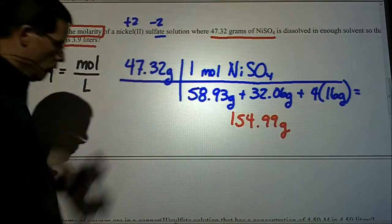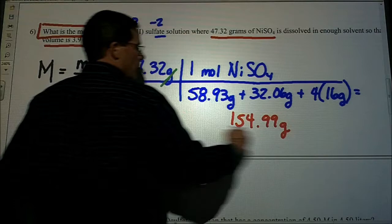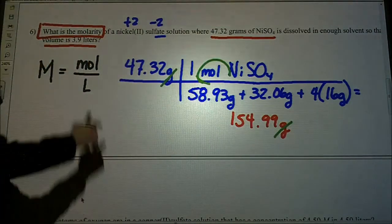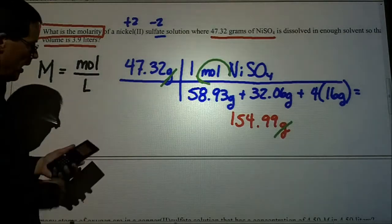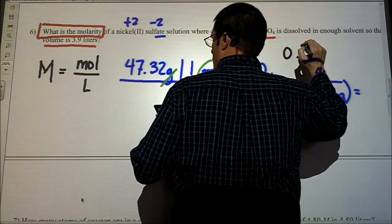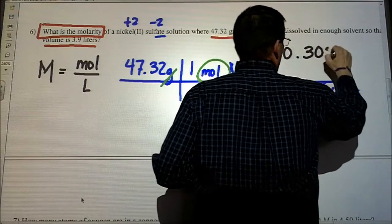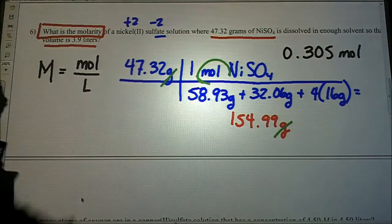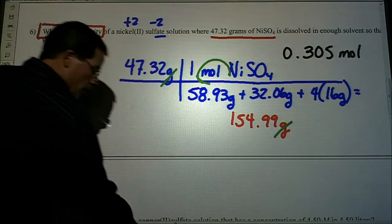We have a like unit, so we can cancel those out. We're left with the unit that we're looking for, which is moles. So we have the first component once we actually calculate this. Let me punch that in real quick. 0.305 moles.